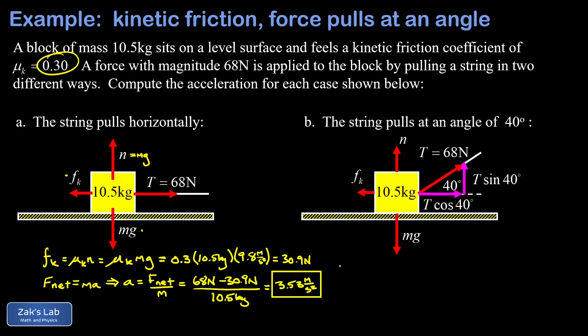Upward we have the normal force plus T sine of 40 degrees, and that better be equal to our downward force of mg. This means our normal force is going to be mg minus T sine 40 degrees. I'll go ahead and just throw in numbers at this point. So mg, that's 10.5 times 9.8 meters per second squared, minus T sine 40, so 68 newtons times the sine of 40 degrees. This gives us a normal force of 59.2 newtons.